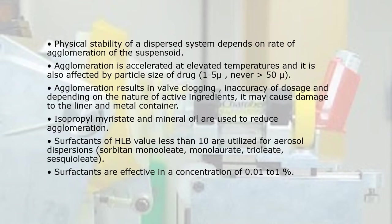Physical stability of a dispersed system depends on the rate of agglomeration of the suspensoid. Agglomeration is accelerated at elevated temperatures and is affected by particle size of 1–5 microns, never more than 50 microns. Agglomeration results in valve clogging, inaccuracy of dosage, and may cause damage to the liner and metal container.